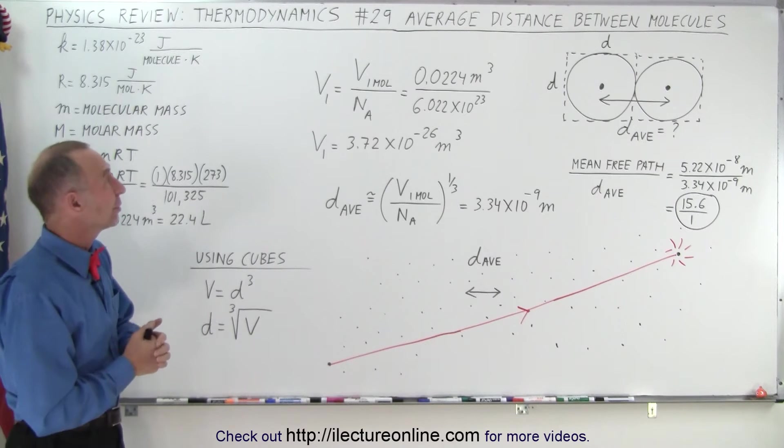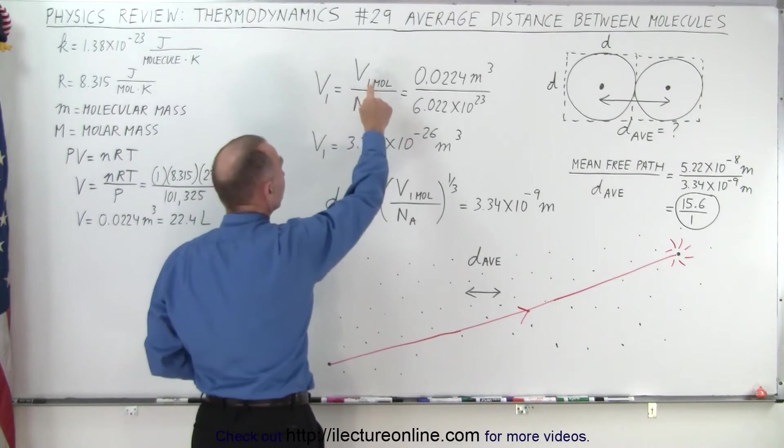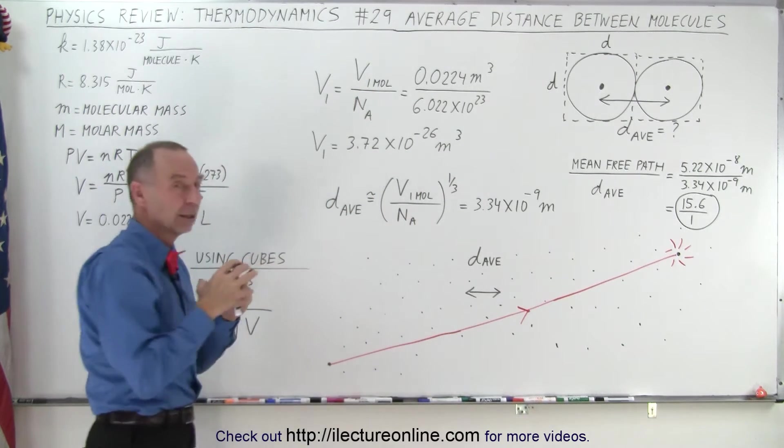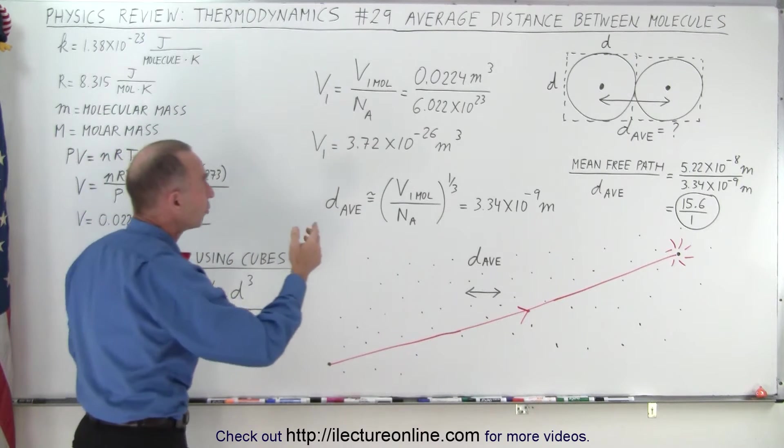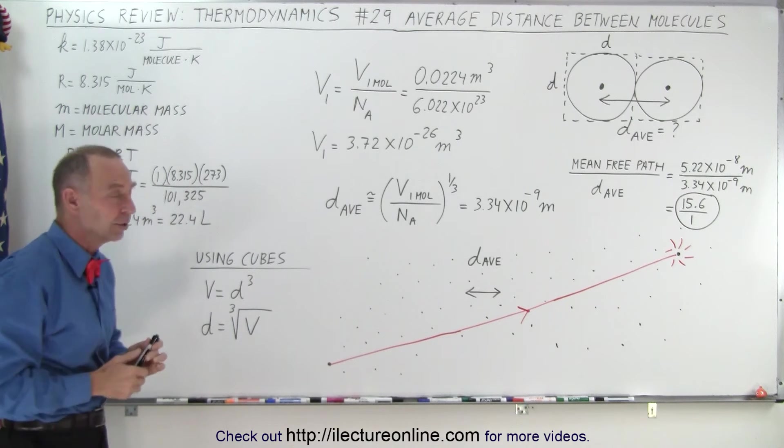What we need to do is find out the volume of a single molecule, which means we take the volume of a whole mole of molecules divided by Avogadro's number, and that gives us the volume of a single molecule. Now using this volume, that's 22.4 liters, we're assuming these are STP conditions.